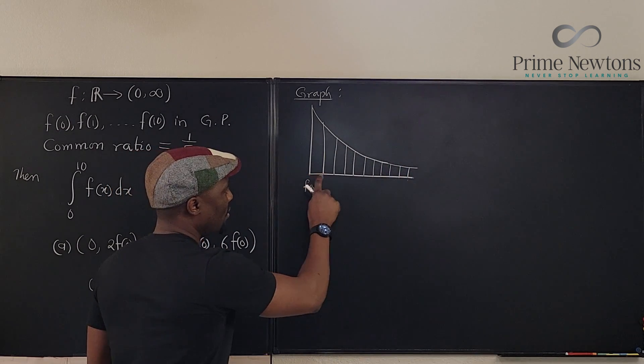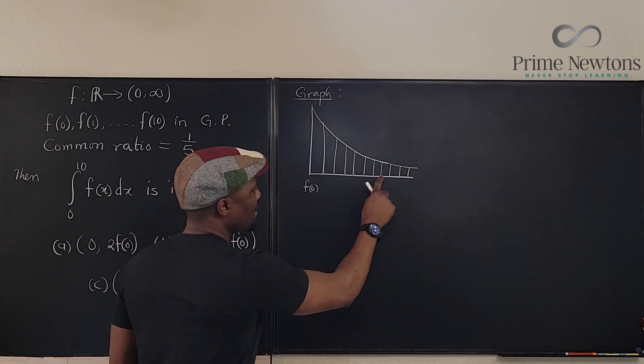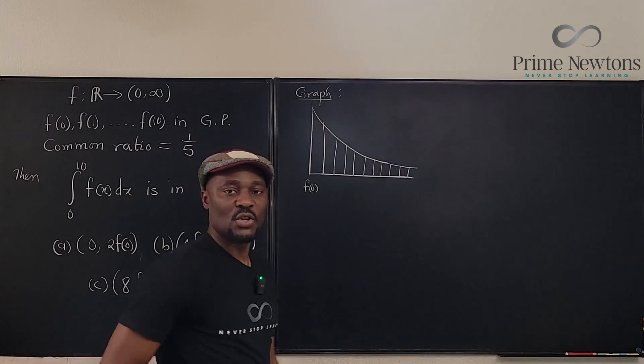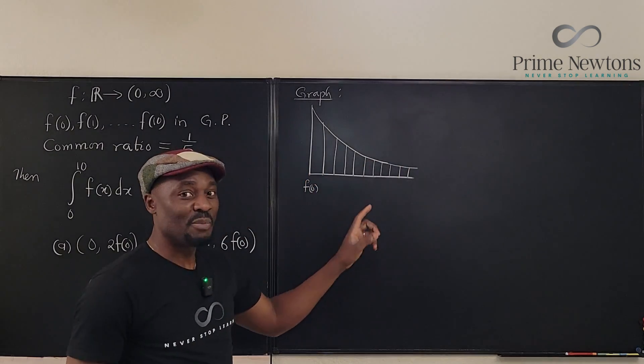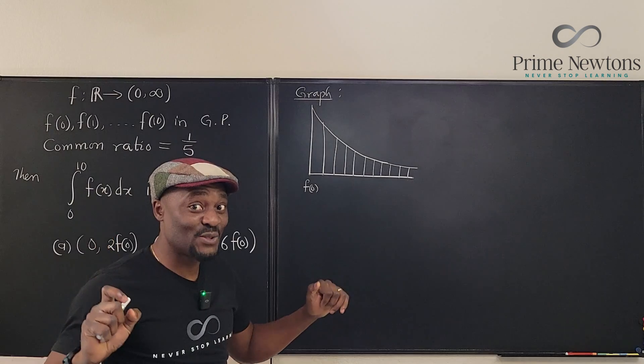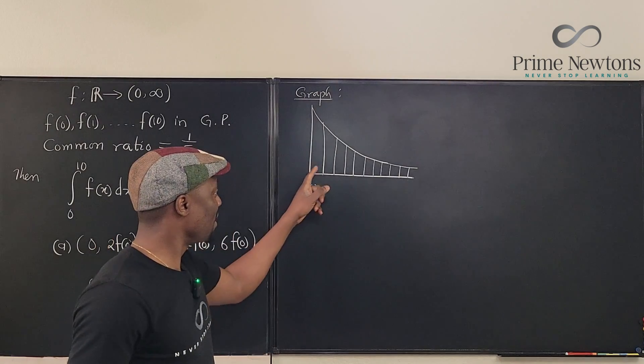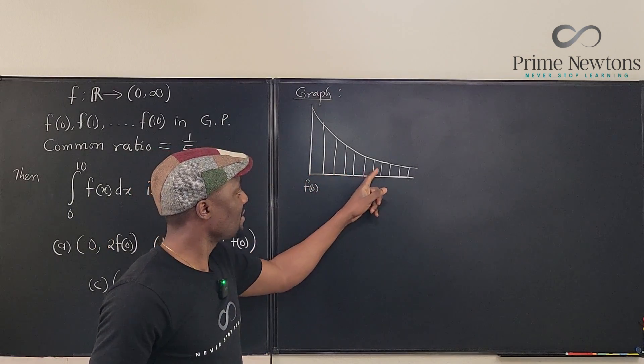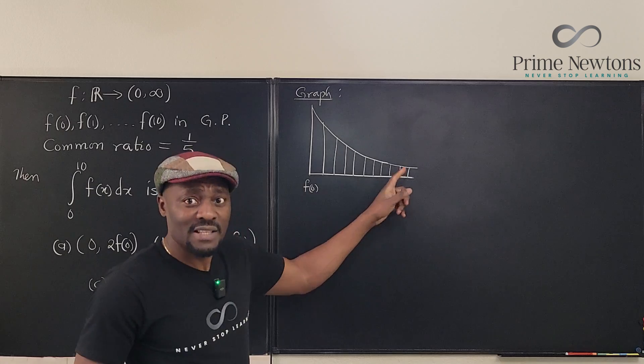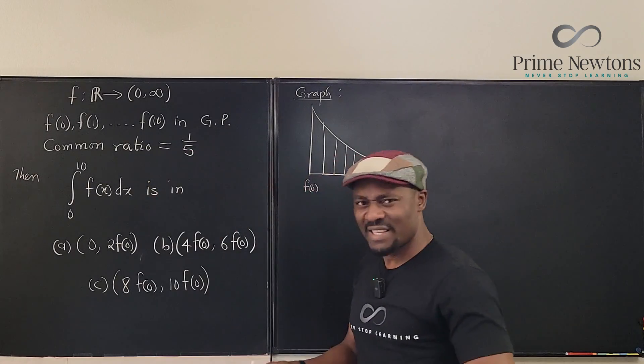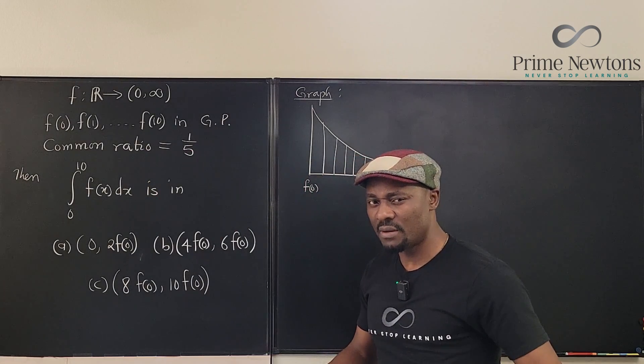So 0, 1, 2, 3, 4, 5, 6, 7, 8, 9, 10. So we got 10 lines, but how many rectangles do we appear to have? 1, 2, 3, 4, 5, 6, 7, 8, 9, 10. We got 10 rectangles also.